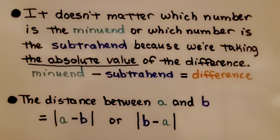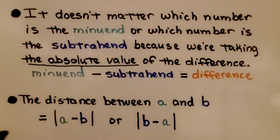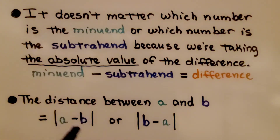It doesn't matter which number is the minuend or which number is the subtrahend, because we're taking the absolute value of the difference. Remember, minuend is first, subtrahend is second. So the distance between a and b is equal to the absolute value of a minus b, or the absolute value of b minus a.